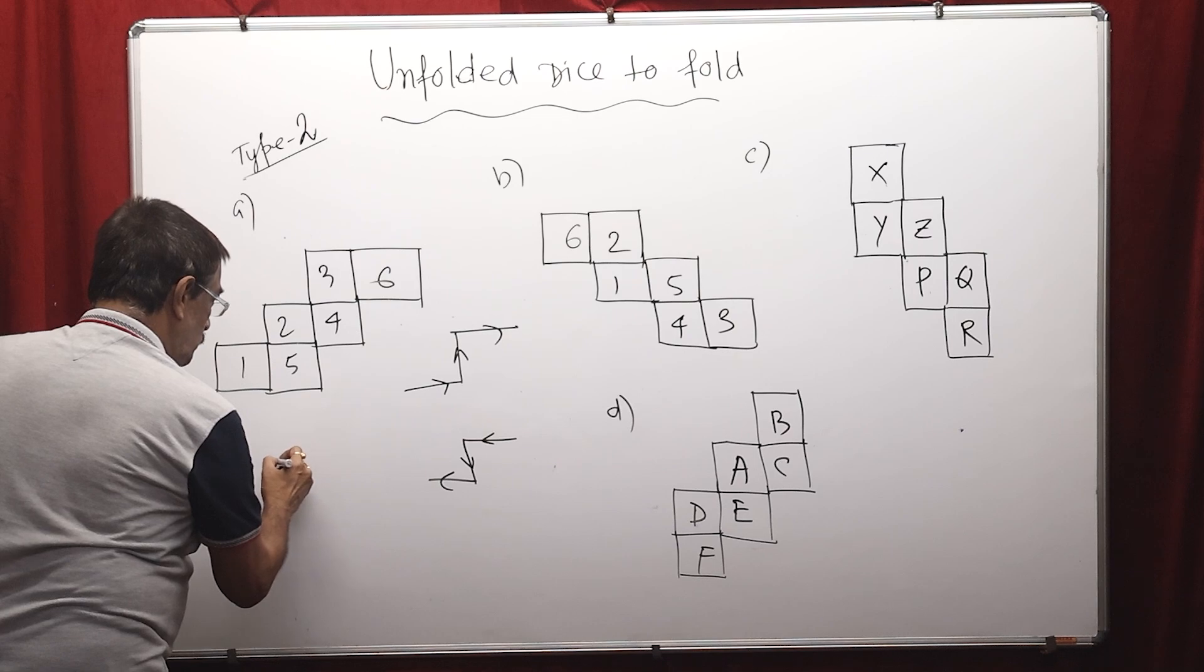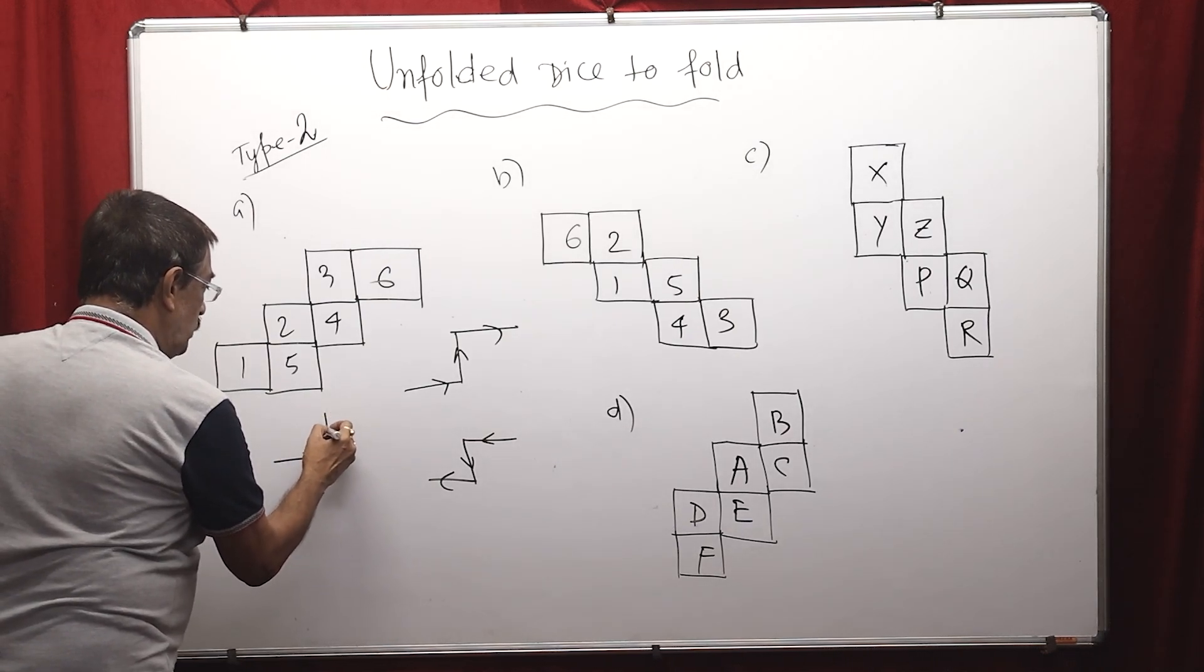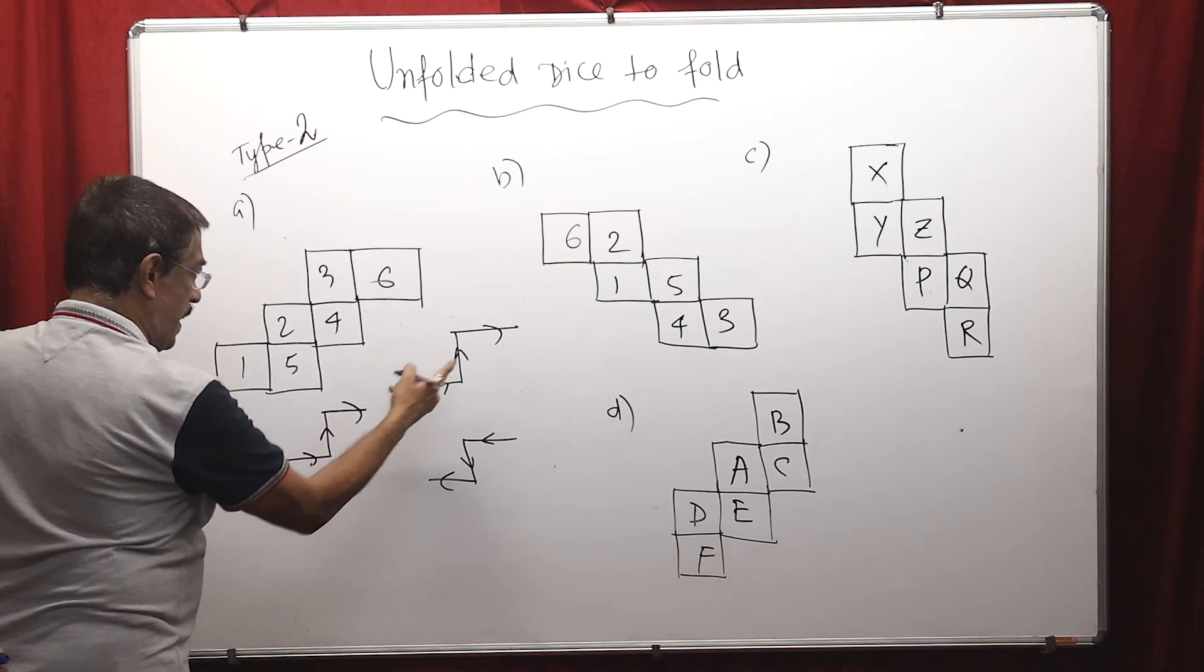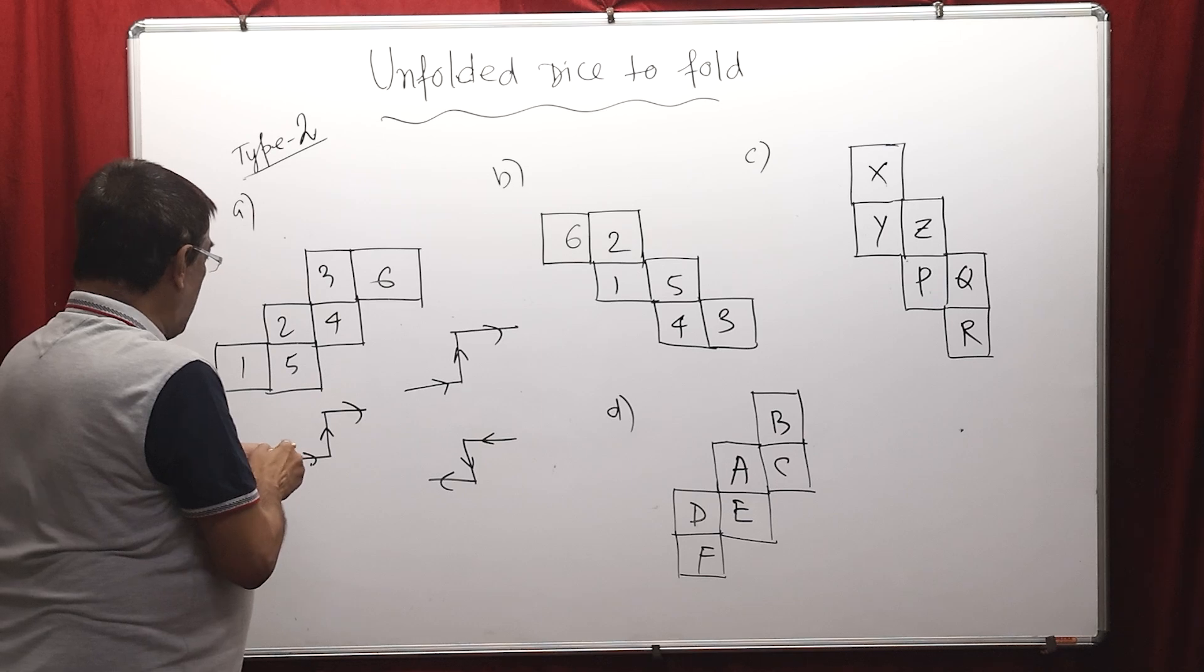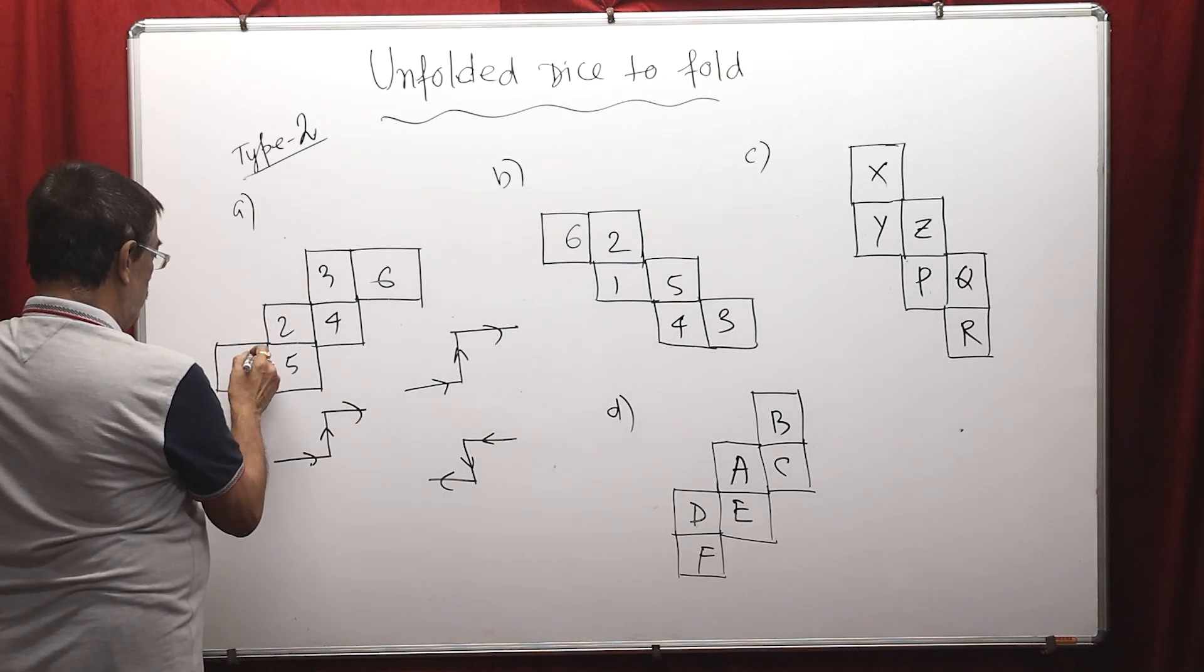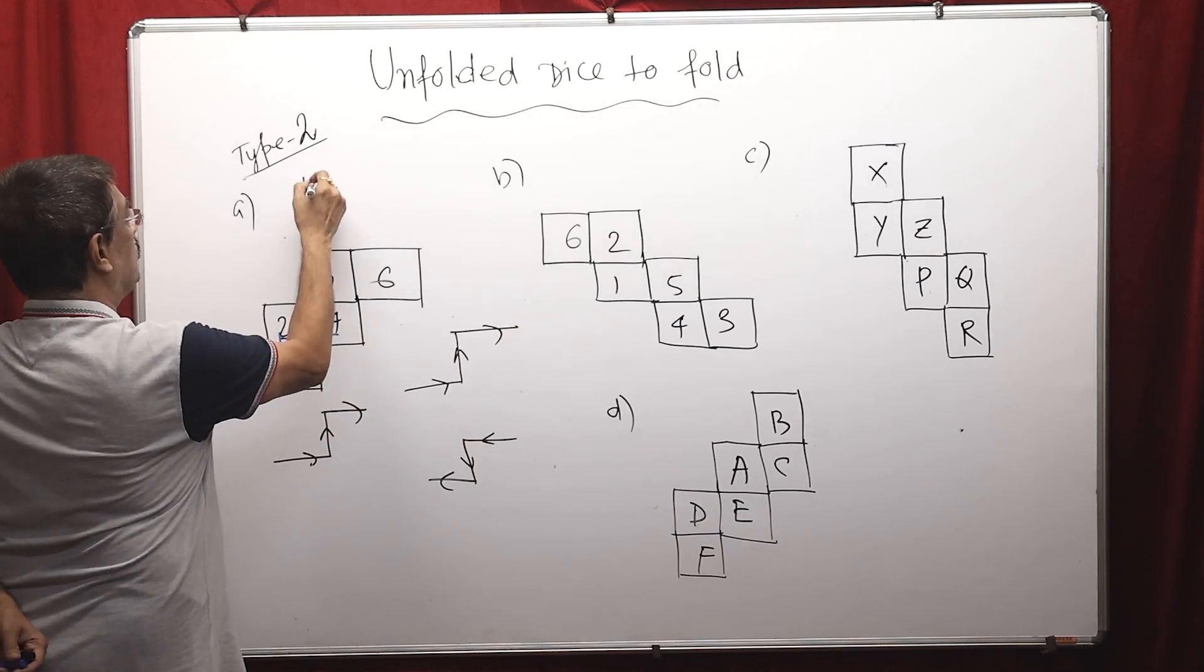If I move this, this way, then we can go this way, then we can go this way. This line, this line parallel, same. So apply the same rule. If I start from anywhere, from here: 1, then 2, then 3. So 1 opposite 4.